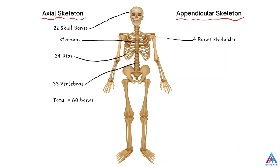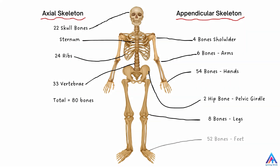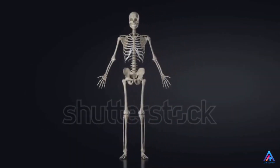The appendicular skeletal system has four bones in the shoulder, six bones in the arms, 54 bones in the hands, two hip bones which form the pelvic girdle, eight bones in the legs and 52 bones in the feet — a total of 126. Add both together and we have a total of 206 bones.